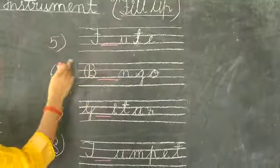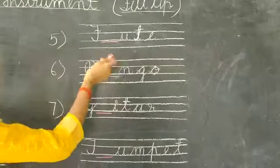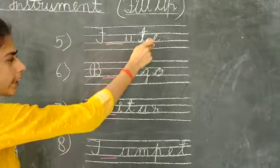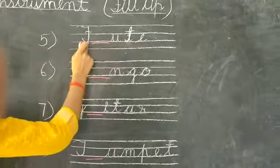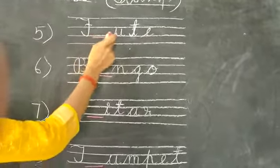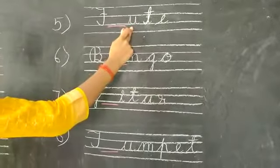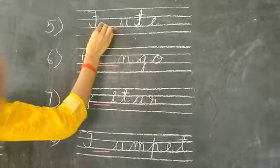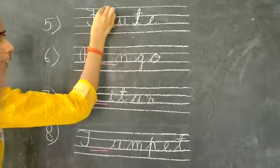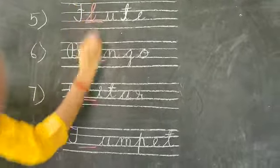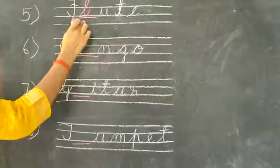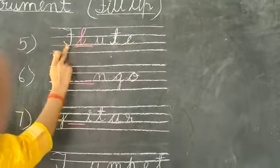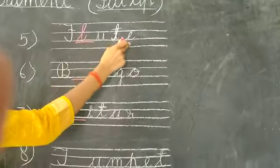Now students, number five: F-dash-N-U-T-E. So tell me, what will we come between F and U? Yes, right — L. F-L-U-T-E. Flute. F-L-U-T-E. Flute.